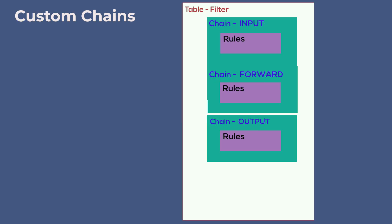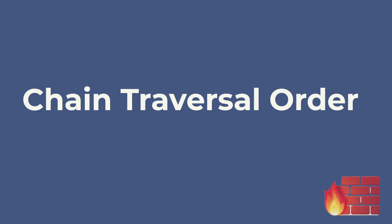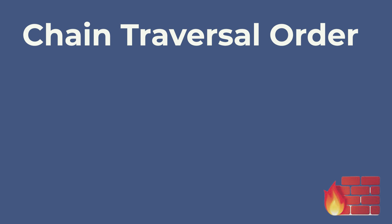For example, you can create chains called LOG and DROP that log when a packet is going to get dropped and then actually drop that packet. This way you can keep an audit trail which can be used for securing your system and for troubleshooting. Now that we understand the core concepts of table, chain, and rules, we will put everything together and learn how the packet flow really works. This is an important concept — let's get into it.